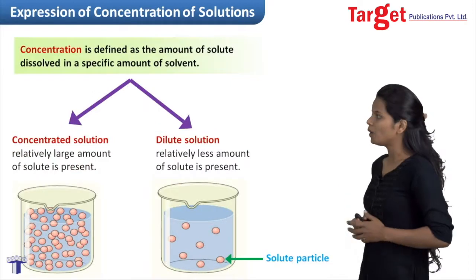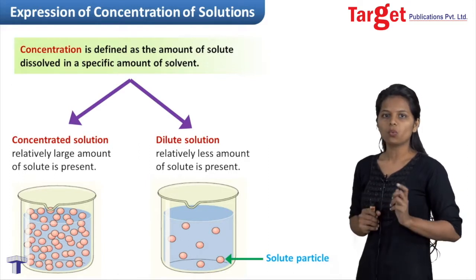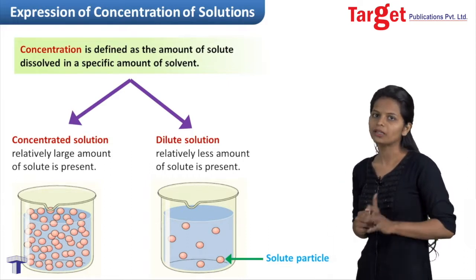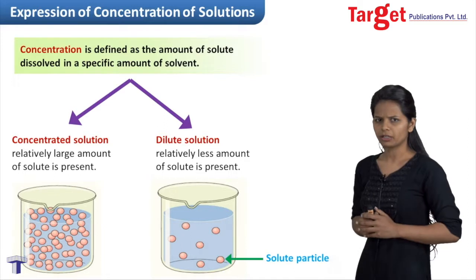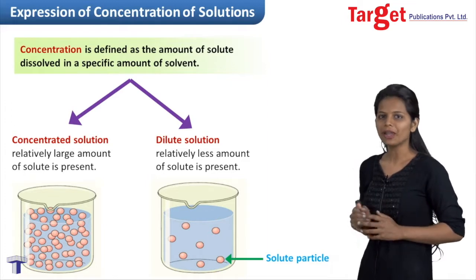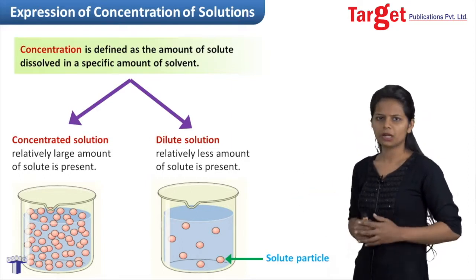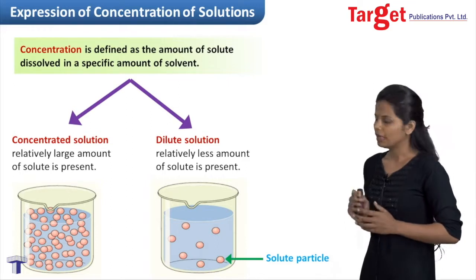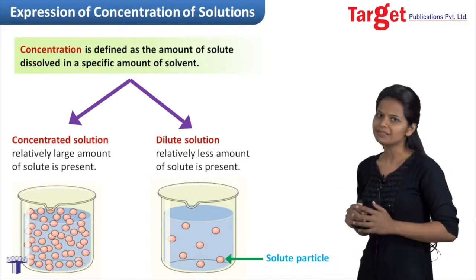Let us start with the qualitative way of expressing concentration. To understand this, let us take an example. I have given you 1 litre of water kept in two separate containers, each containing 1 litre of water. In the first container you add 200 gram of sugar and in the second container you add 100 gram of sugar. The solution which contains more amount of solute particles will be called a concentrated solution and the one with relatively less solute particles will be called a dilute solution. Hence, the solution with 200 gram of sugar is concentrated and the solution with 100 gram of sugar is dilute.